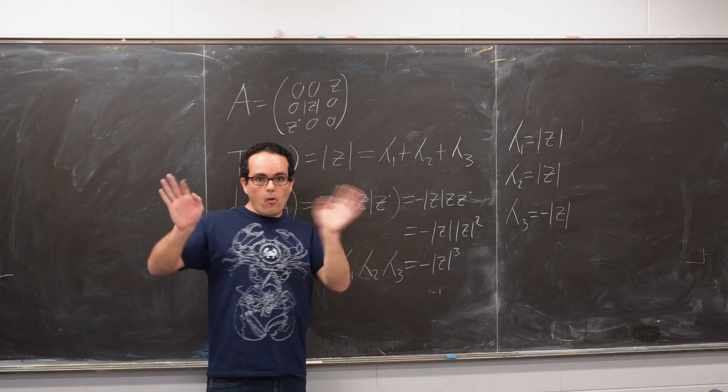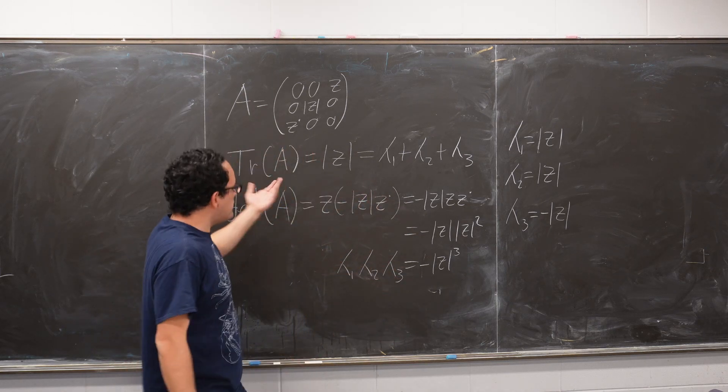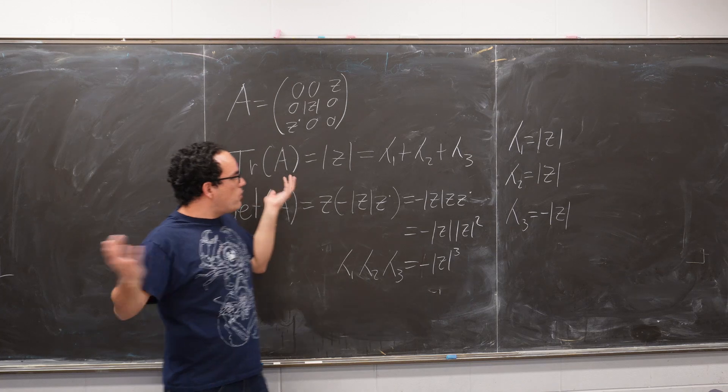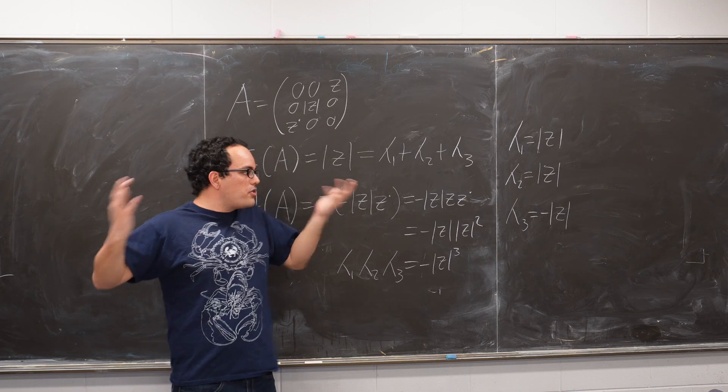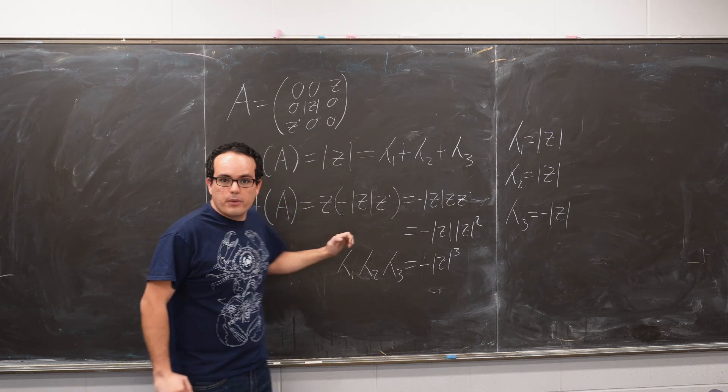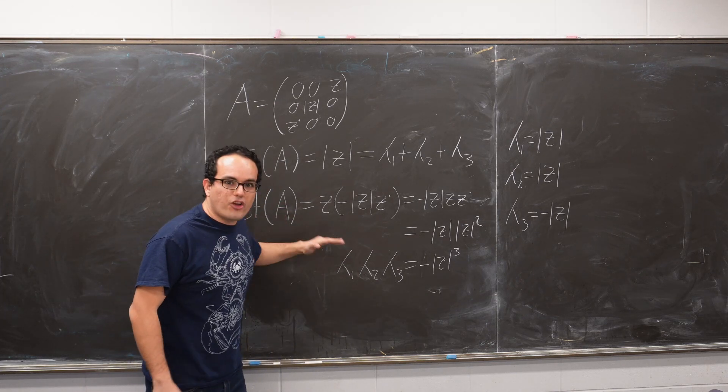And at this point, you may be thinking, oh, but the trace isn't zero, and the determinant isn't zero either. So we cannot use that to remove one of the degrees of freedom. How are you going to get rid of the third degree of freedom? With common sense.